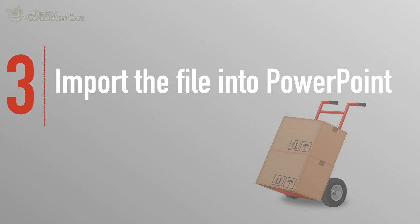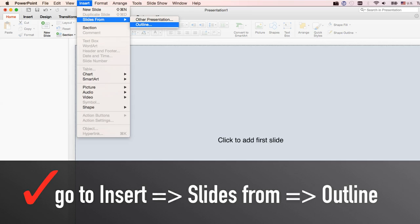Next, you're going to import your saved file into PowerPoint. In your PowerPoint presentation, go to Insert, Slides From, then Outline. Once you select your saved file, sit back and watch your blog post magically transform into a PowerPoint presentation. This is absolutely my favorite part.